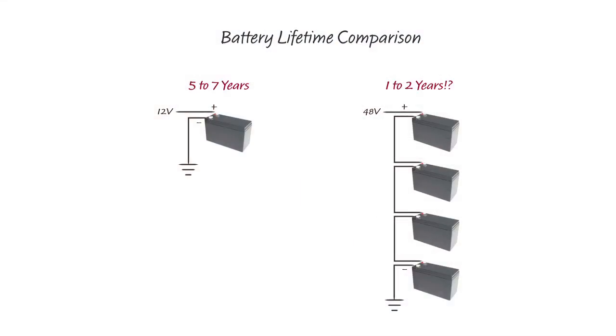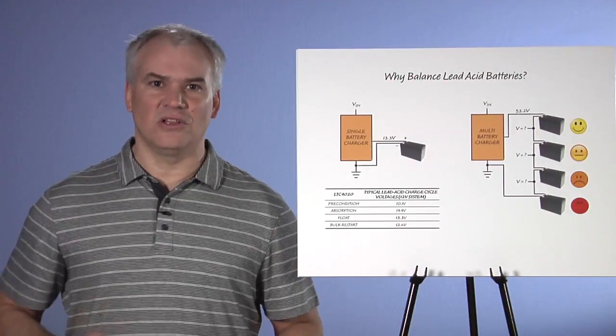Have you ever wondered why the single lead acid battery in your car lasts five, six, maybe seven years? But the series stack of lead acid batteries in your home or office uninterruptible power supply, or UPS, needs to be replaced every one to two years. And this is despite the fact that your car battery is subject to extremes of temperature and vibration, a battery's worst enemies, while your UPS sits quietly under your desk at a constant, cozy temperature, and is seldom called upon to service a load. Let's take a look at what's going on here.